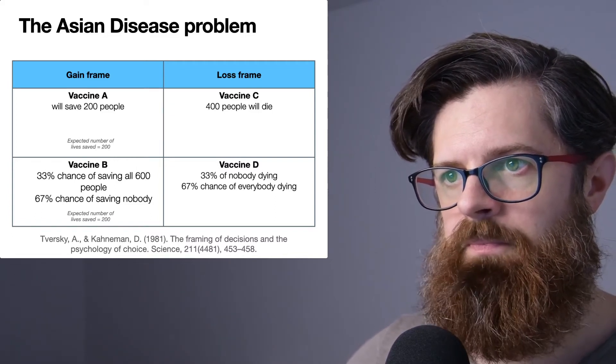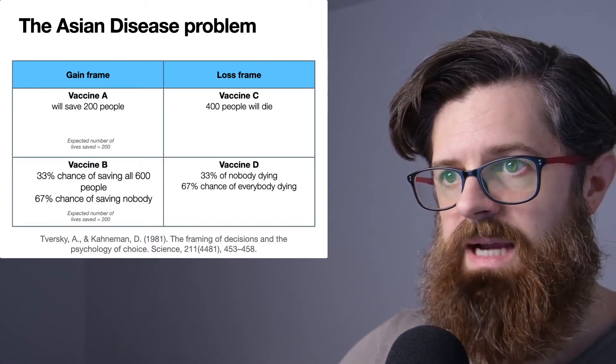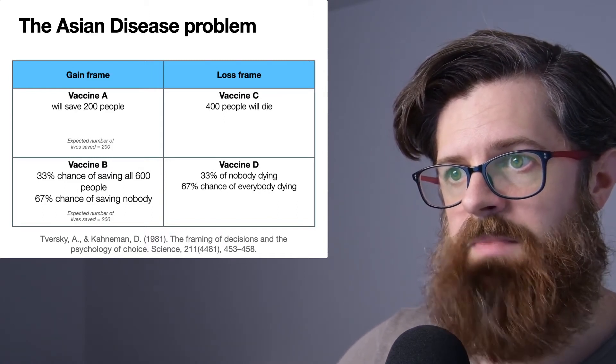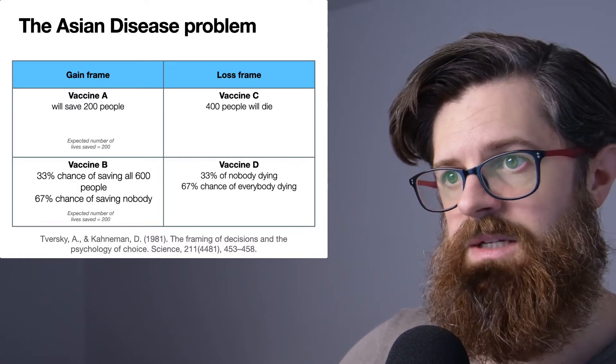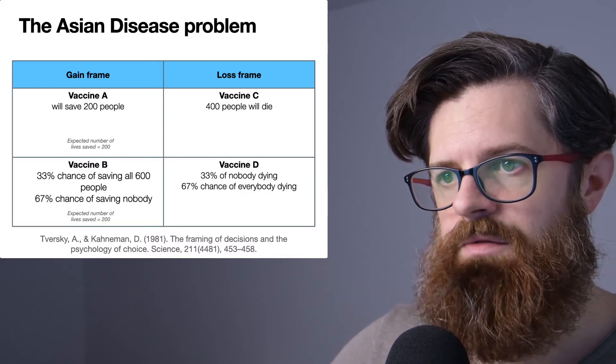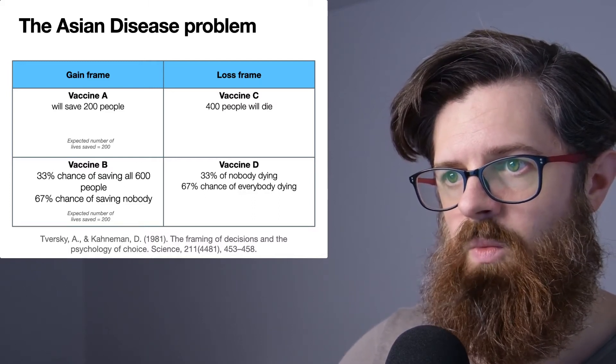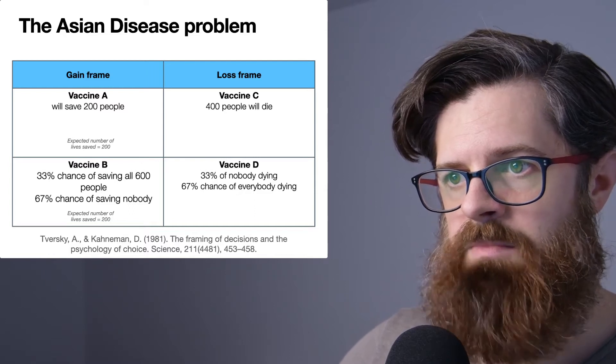Vaccine A, the expected number of lives saved is 200 with no uncertainty. Vaccine B is a risky choice, but when you work it out, the expected number of lives to be saved would be 200.